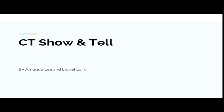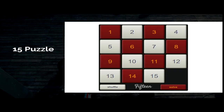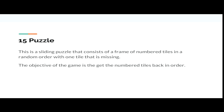Before we go into the algorithm, this is actually the 15th puzzle. This 15th puzzle is actually a sliding puzzle that consists of a frame of numbered tiles in a random order which has one tile that is missing. The objective of this game is to get the numbered tiles back into order.